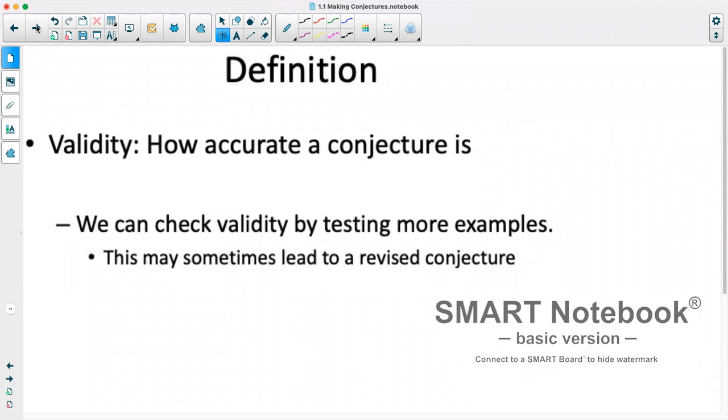Now, sometimes when checking for validity, we might have something that makes it no longer valid. So we could change up our conjecture so that it still works. So, for example, we might have a situation where the values we're putting in don't work if they're negative, in which case we can change our conjecture so that what we expect to happen only occurs if it is a positive value.